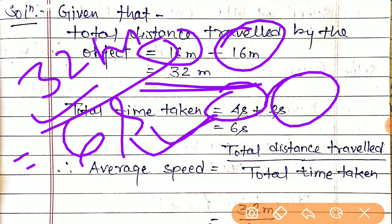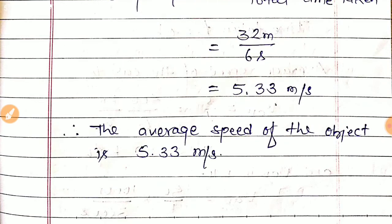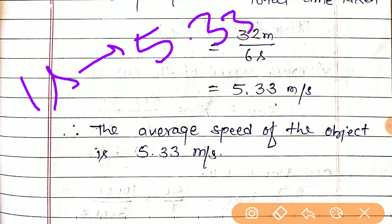Using the formula, we get 5.33 meters per second. This means in one second, the object covers a distance of 5.33 meters. This is the average speed of that object. I hope you understand.